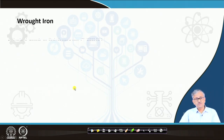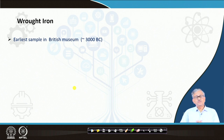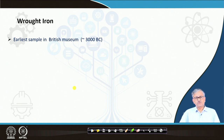Wrought iron — the earliest sample of wrought iron is obtained in the British Museum, dating to around 3000 BC before Christ. Wrought iron is basically produced in the solid state — that is, iron produced in solid state.